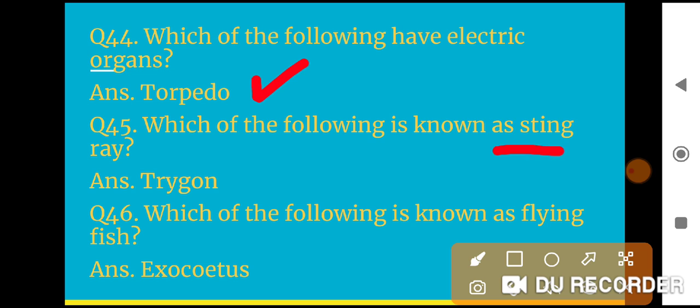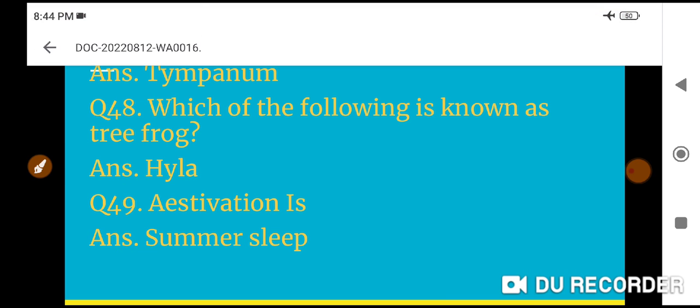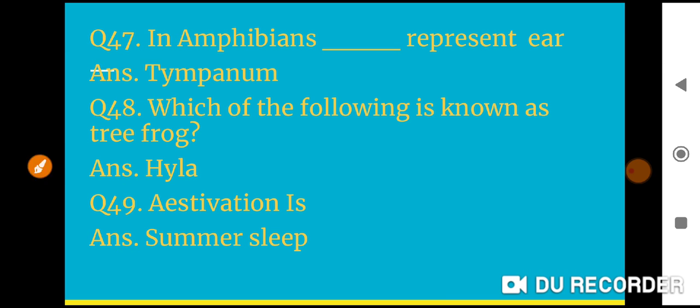Question 43: Poikilotherms are cold-blooded animals. Question 44: Which of the following have electric organs? Torpedo has the electric organs. Question 45: Which of the following is known as stingray? Trygon.